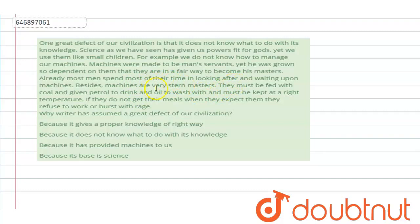Besides, machines are very stern masters. They must be fed with coal and given petrol to drink and oil to wash with and must be kept at a right temperature. If they do not get their meals when they expect them, they refuse to work or burst with rage.